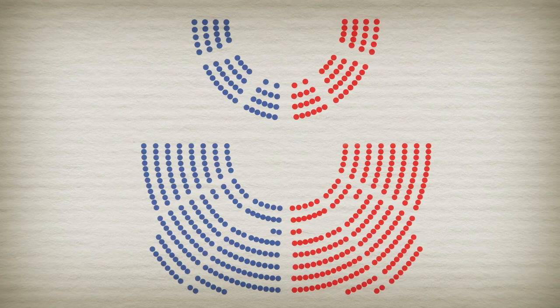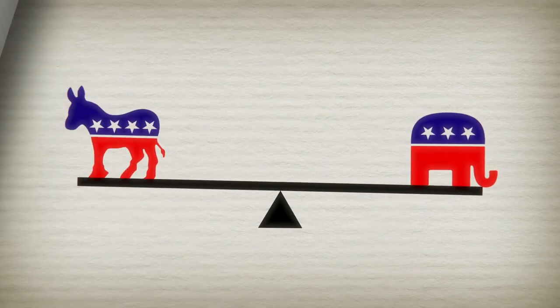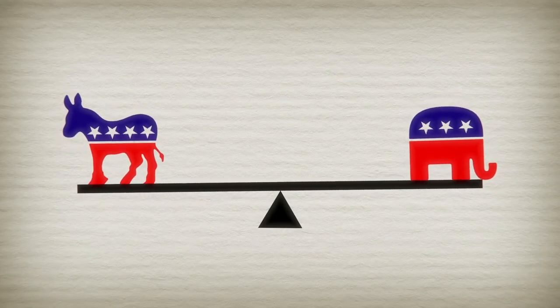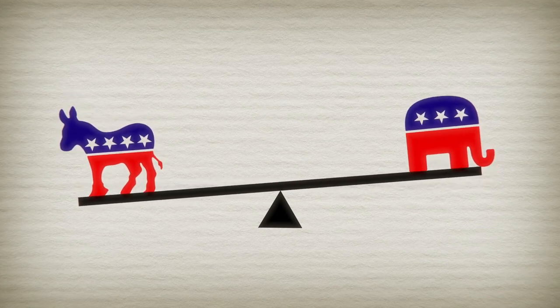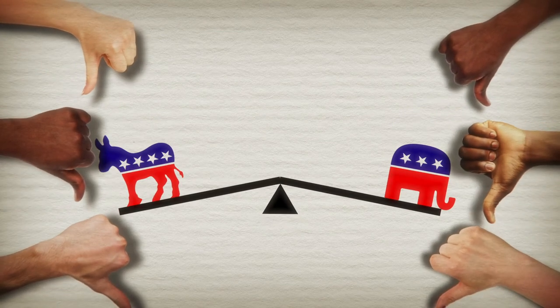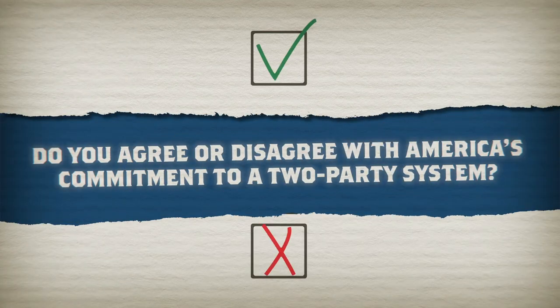They're often called the right and the left because of where they sit in Congress. While the two-party system has been the norm for more than a century, many feel that the diversity of modern American society is not represented and change is needed. Do you agree or disagree with America's commitment to a two-party system?